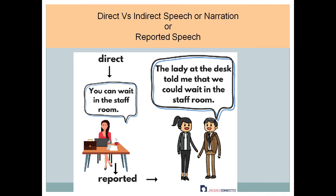Let's look at this picture for better understanding. There is a lady sitting at a desk who says, 'You can wait in the stop room.' This is Direct Speech because it comes directly from the speaker. The listener then reports to another person: 'The lady at the desk told me that we could wait in the stop room.' This is Reported Speech — Indirect Speech. You can notice that some words have been replaced by other words.